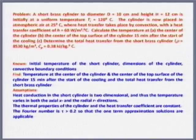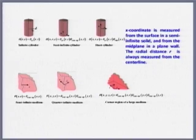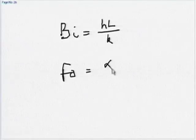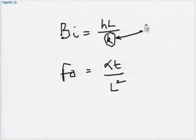So that is how we can conclude transient conduction. Two very important non-dimensional numbers have been introduced: Biot number Bi = hL/k and Fourier number Fo = αt/L², where k is the thermal conductivity of the solid. With this we say goodbye to transient conduction and move on to convection.